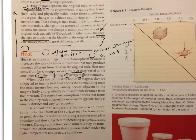When rocks are intruded by bodies of magma, they are subjected to intense heat that affects the surrounding rock. The most intense heating usually occurs adjacent—that's another word I wouldn't use in my everyday talk. I'm going to cross that out, and I would use the words next to. So it would read like this: The most intense heating usually occurs next to the magma body, and gradually decreases with distance from the intrusion. The zone of metamorphosed rock that forms in the country rock adjacent, or next to, an intrusive igneous body is usually distinct and easy to recognize.